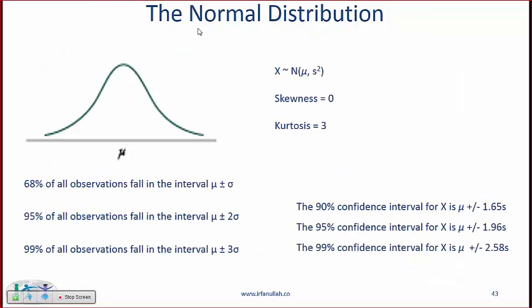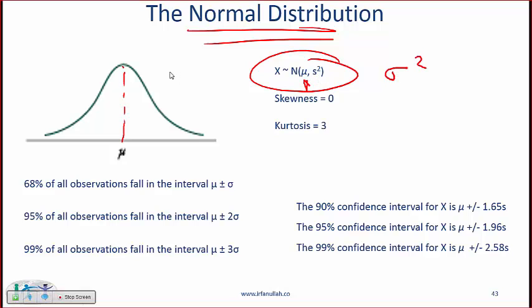Alright now we come to the most testable distribution which is the normal distribution. Generally denoted by this the mu is the mean and sometimes you'll see s squared sometimes sigma squared that is giving you the standard deviation. Different normal distributions can have different means and different standard deviations. But what is it that is common across all normal distributions? What is common is that they always have a skewness of 0 which means they are symmetric.